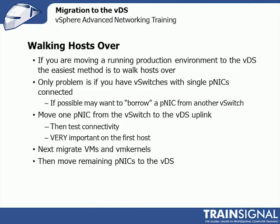If you're moving a running production environment to the distributed switch, it's best to walk hosts over. Normally you're going to have multiple NICs for redundancy — even two for NFS, two for vMotion, or whatever — you're going to walk one of those over to the distributed switch, make sure everything's good, and then walk the other one. The only time this is a problem is if you have a vSwitch with a single physical NIC. You may need to borrow a NIC from another switch, or you may have to take a maintenance window for that flip. But usually people do redundant multiple NICs, so we just walk them over.